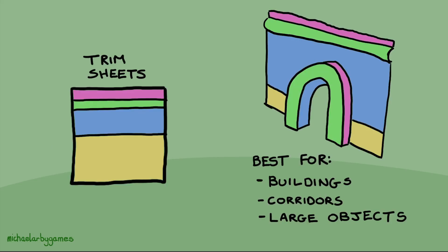The third type is one you're probably less familiar with: the trim sheet. The trim sheet falls kind of halfway between a UV unwrap and a tile map. If you look at the trim sheet, you can see these horizontal stripes which correspond with parts of our object. These are best used for large environmental objects such as buildings, archways, castles, and parts of walls — things that would be too big to fit on a single UV unwrap giving very low resolution, but too complex for a simple tile map.